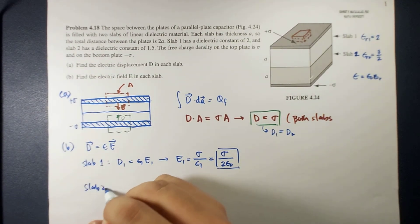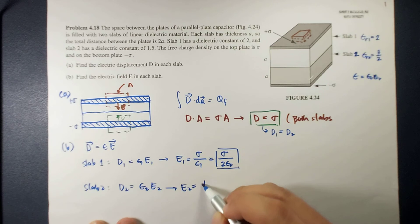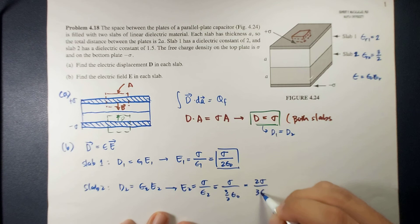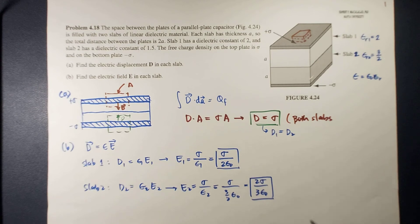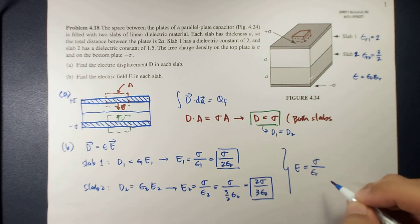And then for slab 2, so this is D2 will be equal to epsilon 2 E2. So E2 is equal to sigma over epsilon 2, which is equal to sigma over 3 halves epsilon naught or 2 sigma over 3 epsilon naught. Okay? So in summary, the electric field will just be equal to sigma over epsilon r epsilon naught.